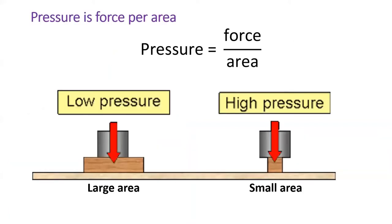The physics definition of pressure is force divided by area. So if we have a weight sitting atop a large platform, that platform exerts less pressure on the ground than the same weight atop a small platform.